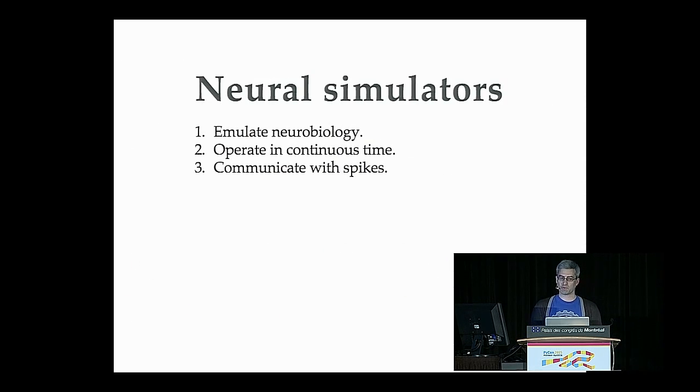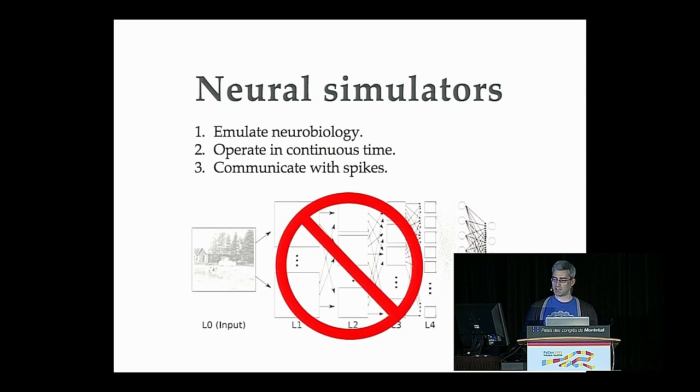So the types of software that I'm going to tell you about today are called neural simulators. There's three very important features of neural simulators that I'm going to talk about. The first is that they attempt to emulate neural biology at some level of abstraction. And as a consequence of emulating neural biology, they operate in continuous time and they communicate with spikes. So I'll talk about a bit about what that means shortly.